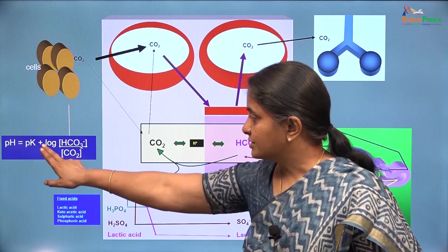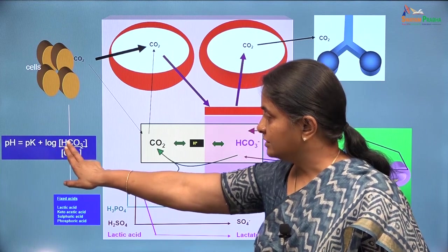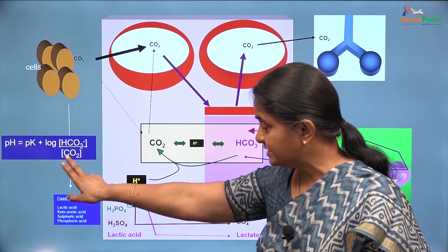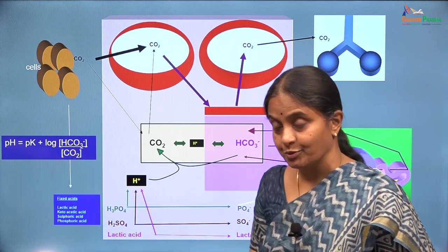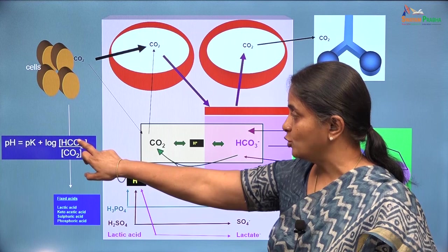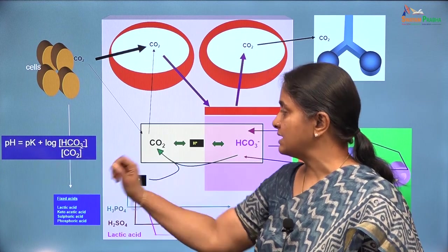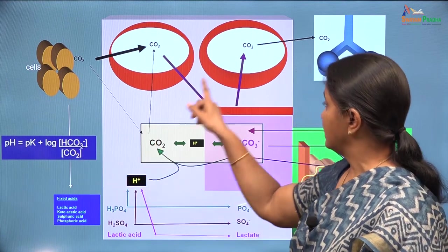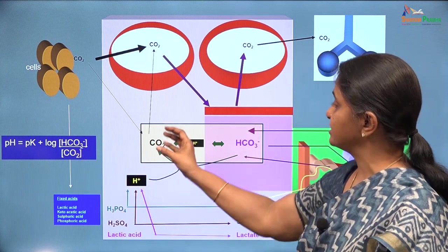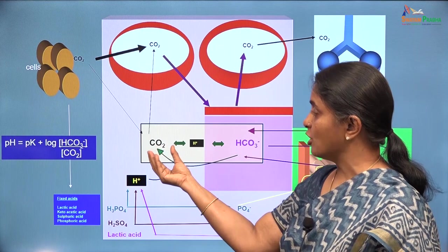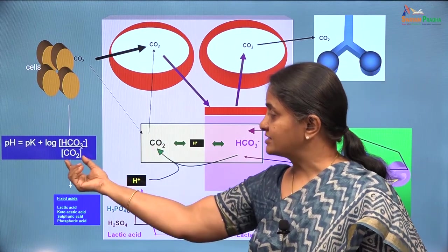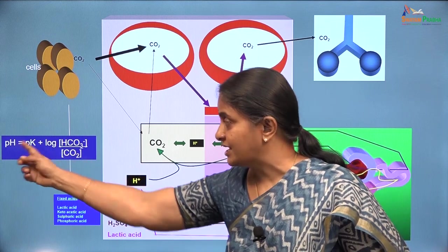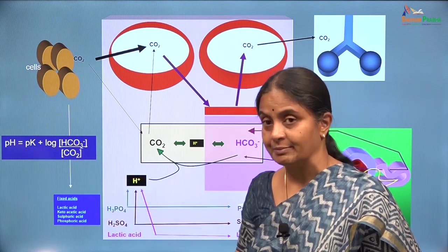Since pH depends on the ratio of bicarbonate to carbon dioxide, this ratio has to be 20 so as to have a pH of 7.4. If bicarbonate goes up, pH will increase, but a corresponding increase in carbon dioxide — if the lungs withhold some carbon dioxide as a compensatory mechanism — will limit the change in pH even though bicarbonate has gone up.